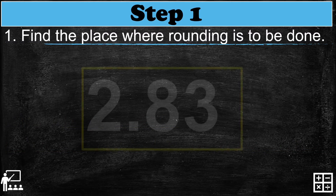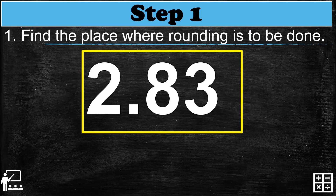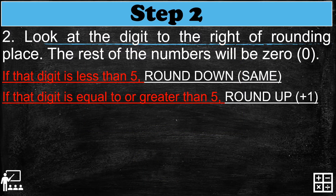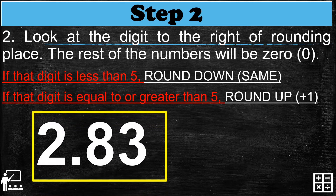Let's try. I have here 2.83, or two and eighty-three hundredths. First step is to find the place where rounding is to be done — we're focusing on the tenths place, and number eight is our tenths place digit. Step two: look at the digit to the right of the rounding place. The tenths digit is eight, and the number to the right is three.